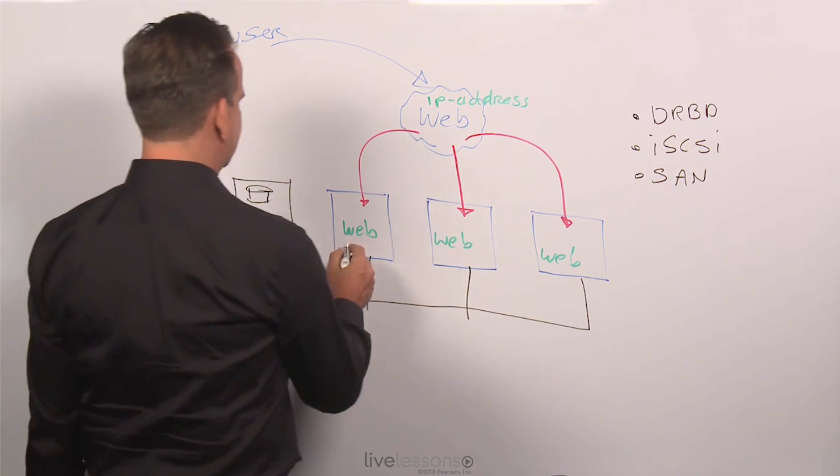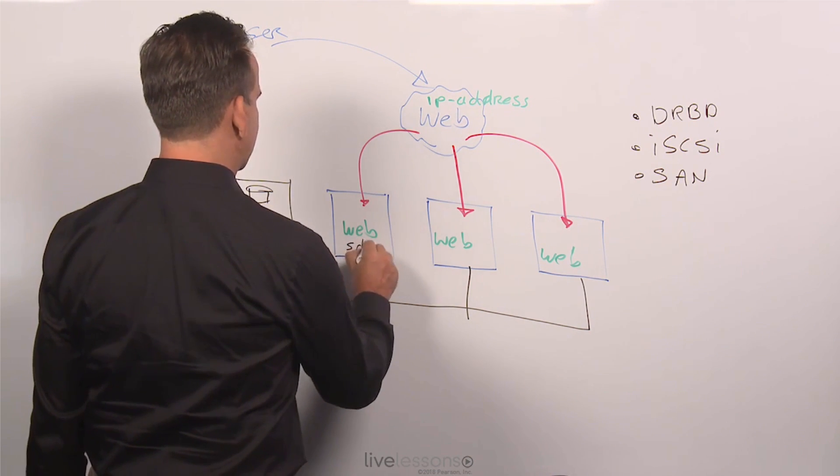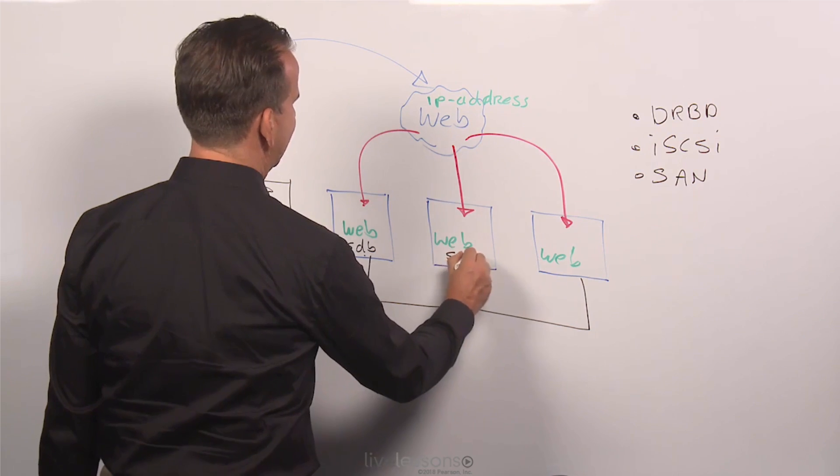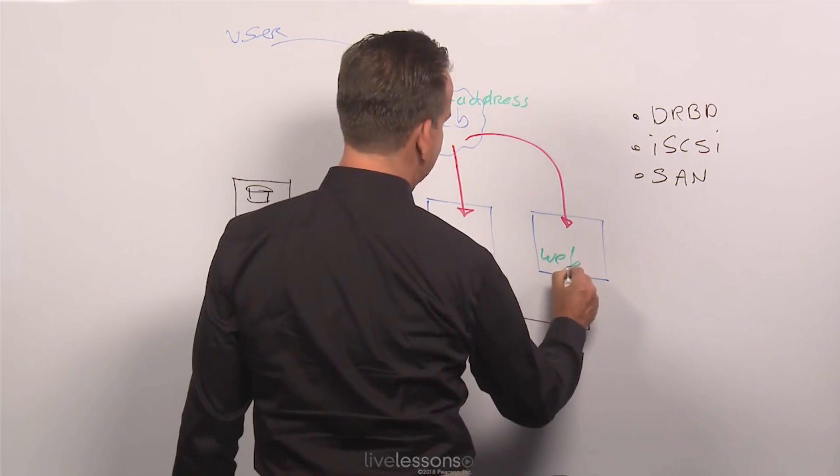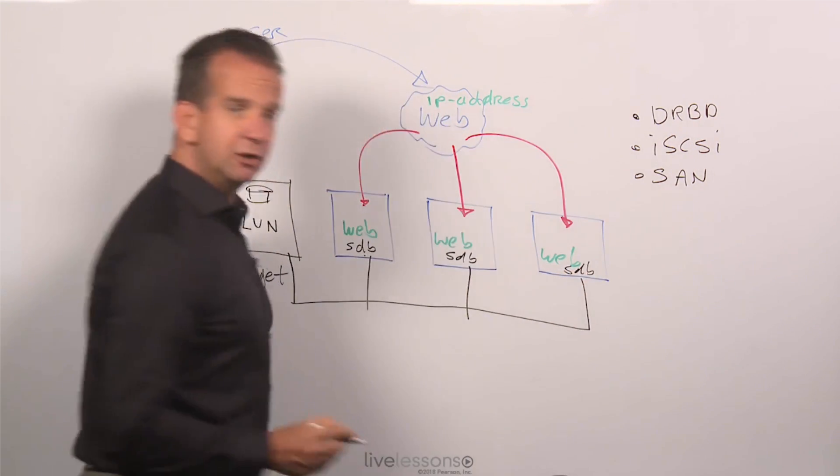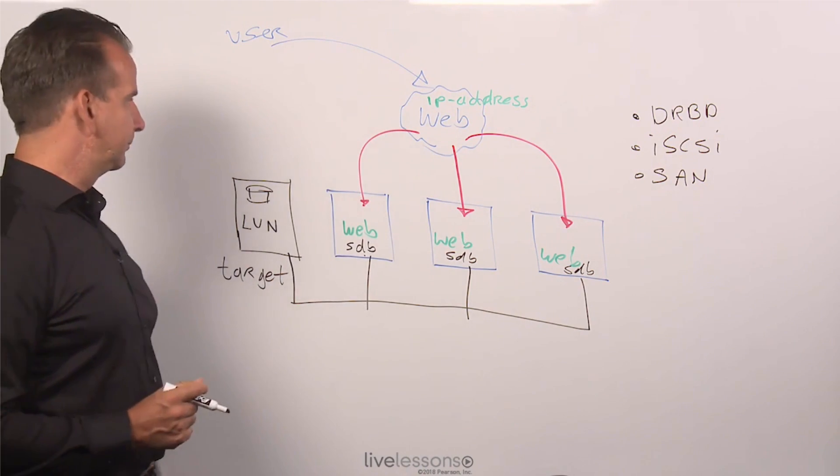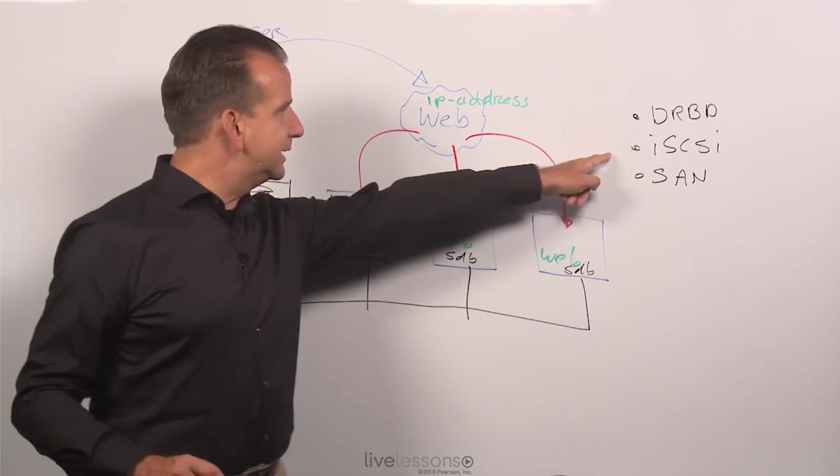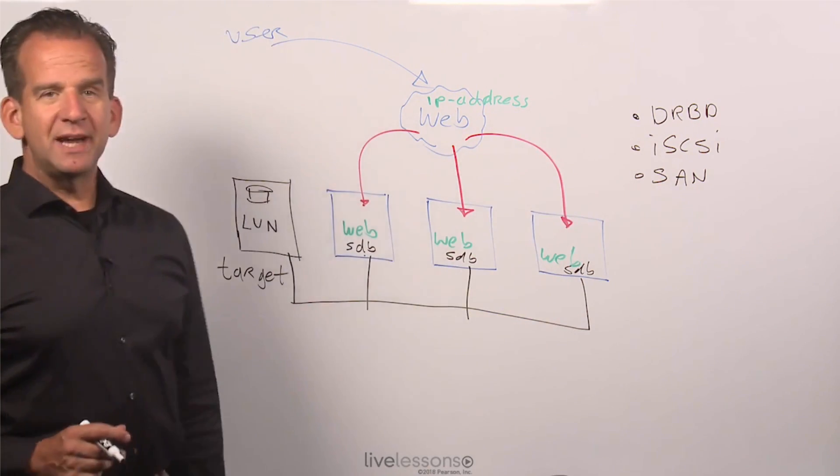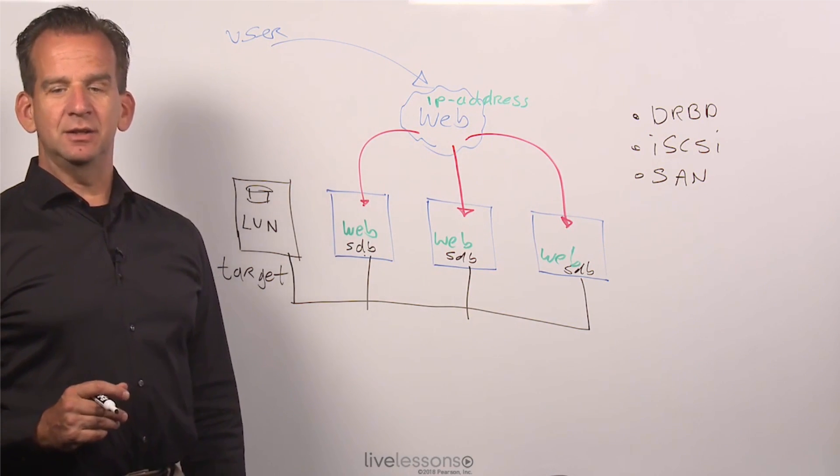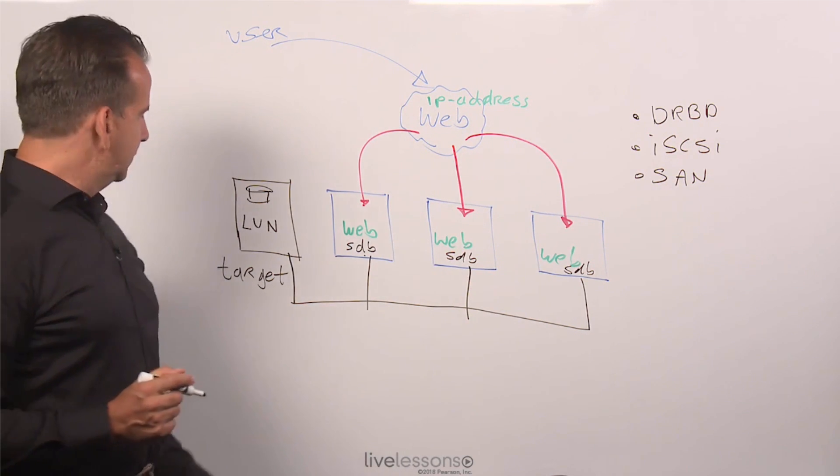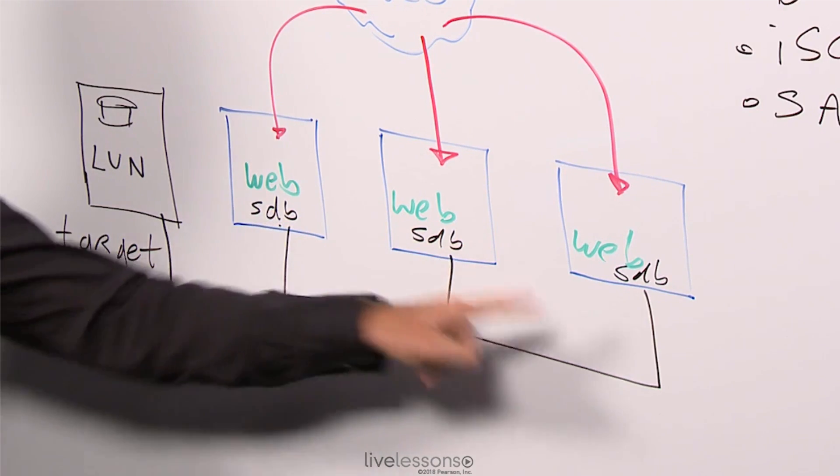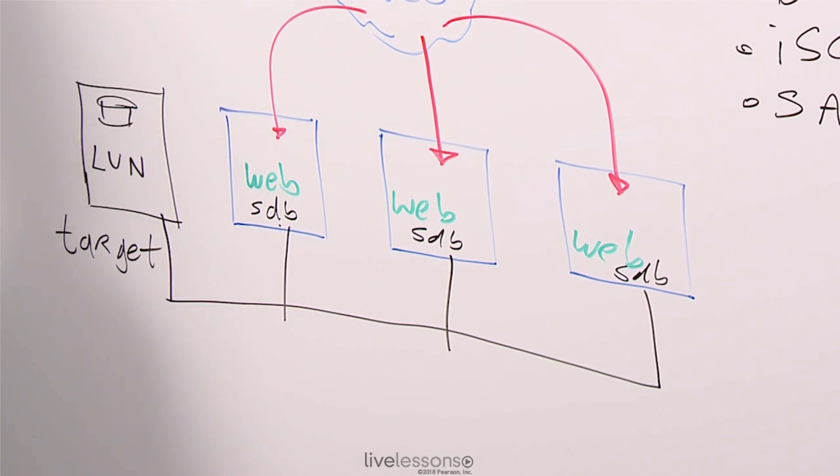And the result will be that on your servers you will have an additional device, like an SDB device for example, which really is a shared storage device. iSCSI, like DRBD, is just taking care of representing a block device. So the result of iSCSI will be that every server will see an SDB device.